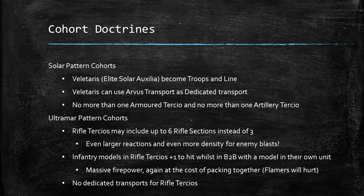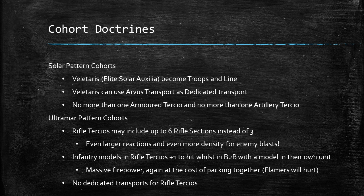The first is the Solar Pattern Cohort. This makes the Velataris tertios — the elite Solar Auxilia infantry — become troops and line, which is always a great thing to do. It also lets them use Arvus lighters as dedicated transports, so you can have elites storming enemy positions via airborne transports. The restriction is that you can't take more than one armored tertio and one artillery tertio in your army. Armored tertios are really good, so it is a relevant restriction if you're focusing on elites.